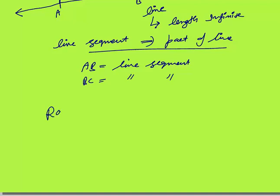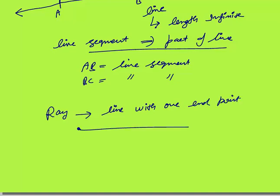What is a ray? A ray is a line with one end point. One end point is there and it can be extended in one direction infinitely. This is a ray — this is point A, this is point B. It can be extended further from point B. This is called a ray.